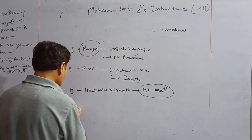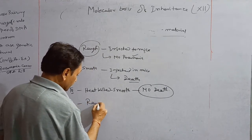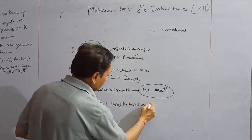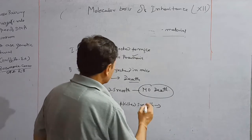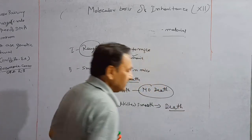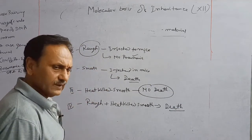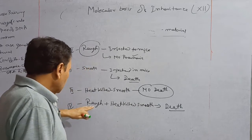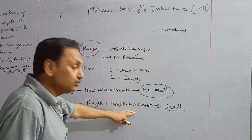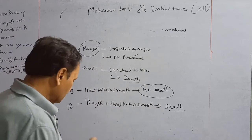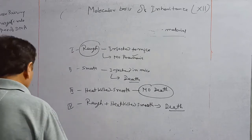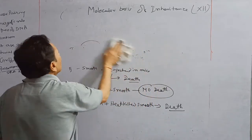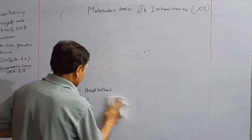In the fourth step, rough strain plus heat-killed smooth pneumonia were injected together. The mice were not in survival condition and they died. Based on this experiment, Griffith proposed that the heat-killed DNA transformed the rough bacteria into smooth type, causing pneumonia and ultimately killing the mice. However, due to this incomplete experiment, scientists were not ready to accept the conclusion that DNA is the genetic material.